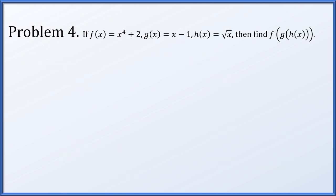Problem 4: if f of x is x to the fourth plus 2, g of x is x minus 1, and h of x is root x, what is f of g of h of x? We go one step at a time: h of x is root x, so g of root x is root x minus 1. Plugging that into f gives us root x minus 1 to the fourth plus 2.